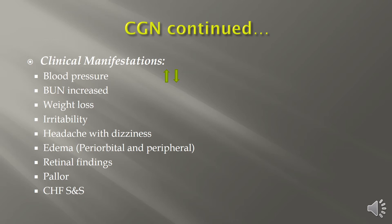Blood pressure may be increased or decreased as a clinical manifestation of chronic glomerular nephritis. It increases with kidney damage and waste buildup, but depending on dehydration status, it could become decreased. Retinal findings include visual changes due to deposits associated with CGN from changes in vasculature; retinal separation or vasculitis can cause vision loss. Patients also present with weight loss, irritability, headache, dizziness, and periorbital and peripheral edema. Adventitious breath sounds and fluid retention are also typical findings.